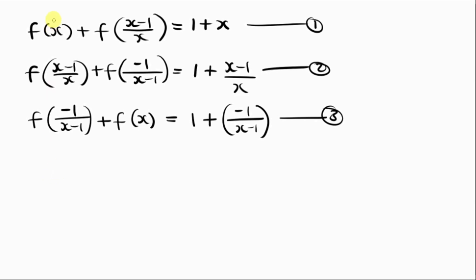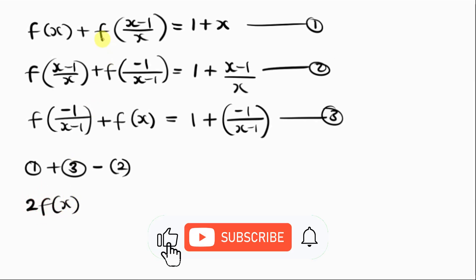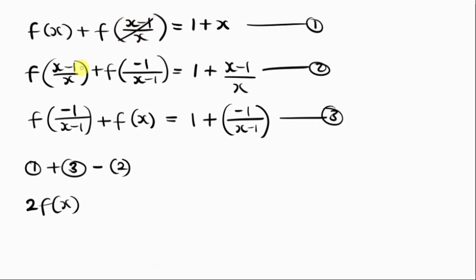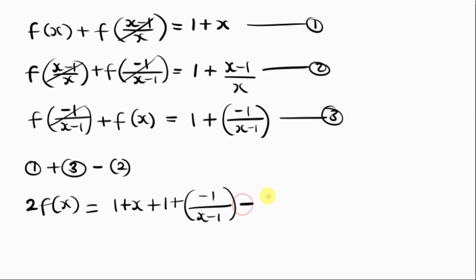Notice that equation 1 and equation 3 both have f of x in them, so I'm going to add equation 1 and equation 3. Since equation 2 does not have f of x, I'm going to subtract equation 2. Adding equations 1 and 3 gives 2 f of x on the left. Subtracting equation 2 cancels the other f terms, leaving only 2 f of x. On the right I have 1 plus x, plus 1 plus negative 1 all over x minus 1, minus 1 plus x minus 1 all over x.